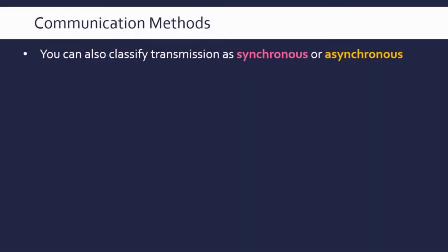We've looked at two communication methods already — parallel and serial transmission — two separate methods. We've now got synchronous or asynchronous transmission.